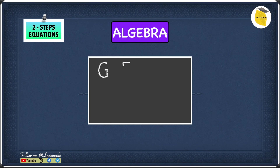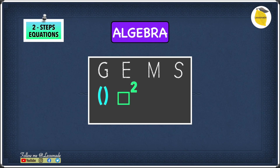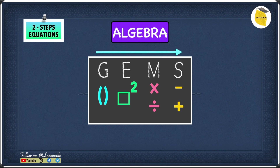GEMS starts with G, then E, then M, and finally S. G stands for groups, E stands for exponents, M stands for multiplication and division, and S stands for subtraction and addition. When following the order of operations you start with groups and end with subtraction and addition.